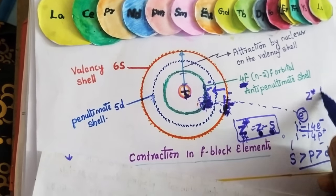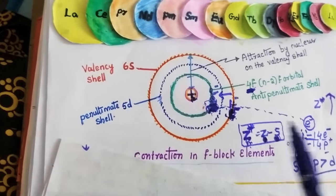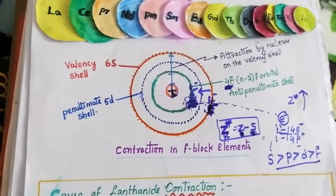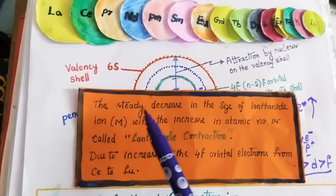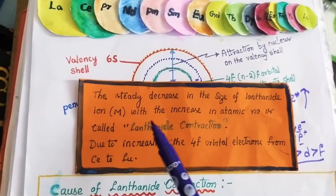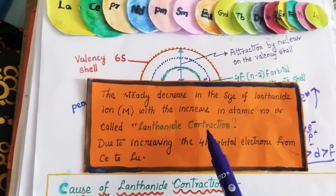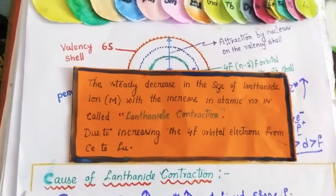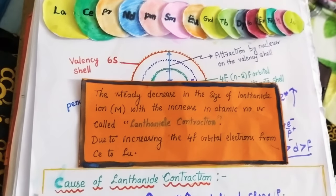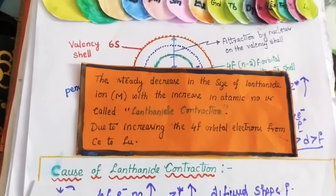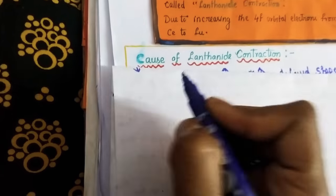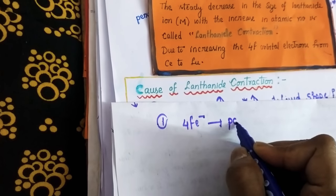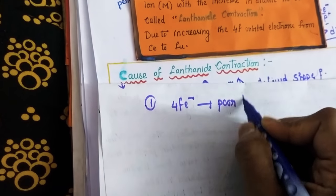From lanthanum to lutetium, atomic number increases from 57 to 71, so effective nuclear charge Z* also increases — this is the reason for lanthanide contraction. To summarize: the steady decrease in atomic sizes of lanthanide ions with increasing atomic number is called lanthanide contraction, due to the increase in number of 4f orbital electrons from cerium to lutetium. The first reason is that as the number of 4f electrons increases, they have poor shielding capacity.